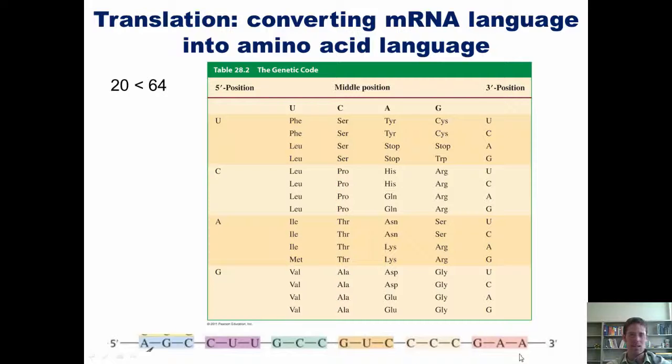What amino acid does GAA correspond with? Well, I look at the table: G, I look at the column A, and then I go here to A. It corresponds to glutamic acid.